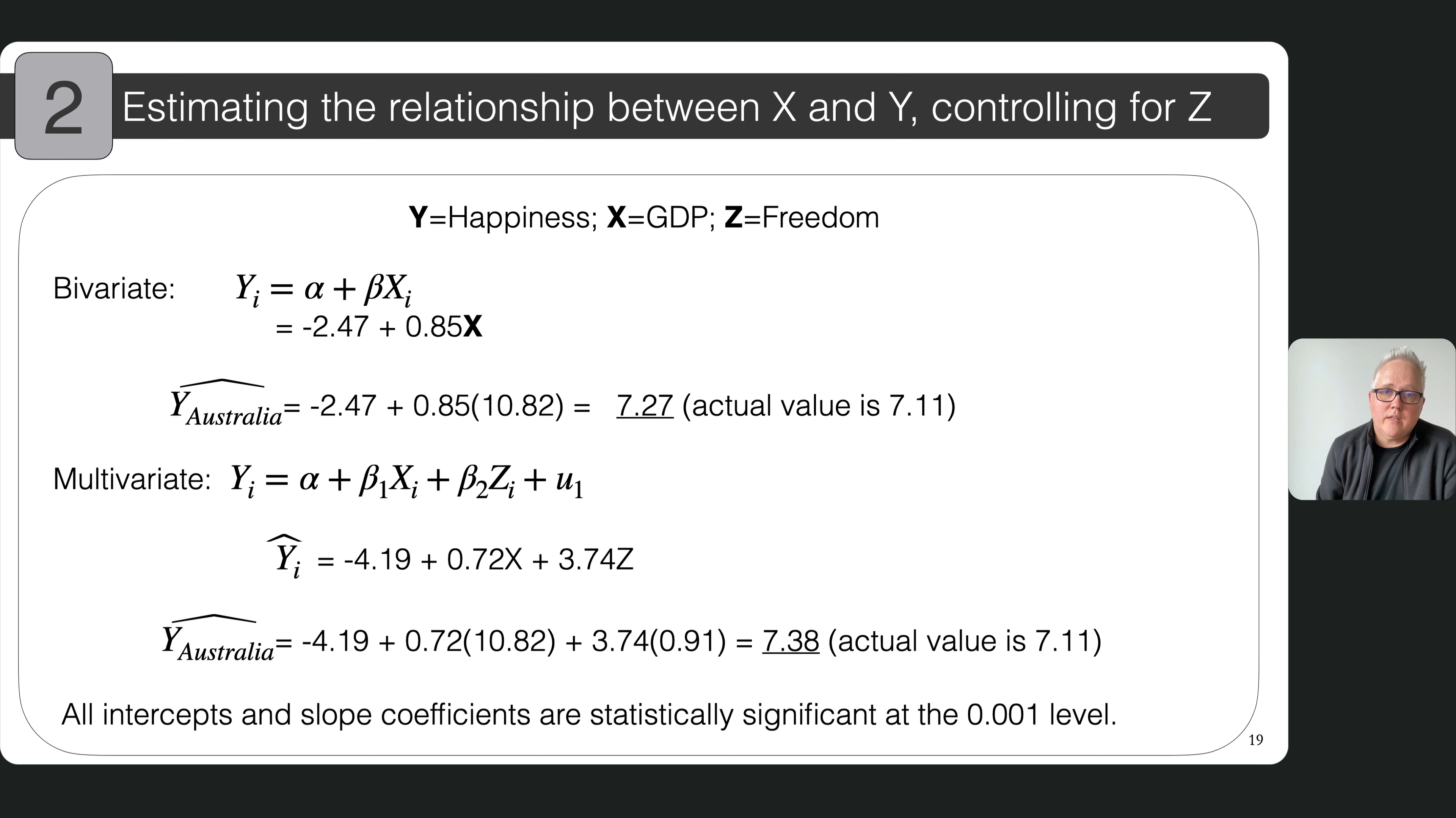Now in the multivariate approach, you can add in your additional variable freedom in this case, and you see the intercept value is lower, it's negative 4.19. The coefficient for GDP is a little bit smaller, 0.72 compared to 0.85 above. And then you get the slope for freedom of 3.74. You plug that in with your values for GDP 10.82 for happiness and 0.91 for freedom. And that gives you an expected happiness measure for Australia of 7.38, which is actually a little bit higher than the observed value that I mentioned before of 7.11.